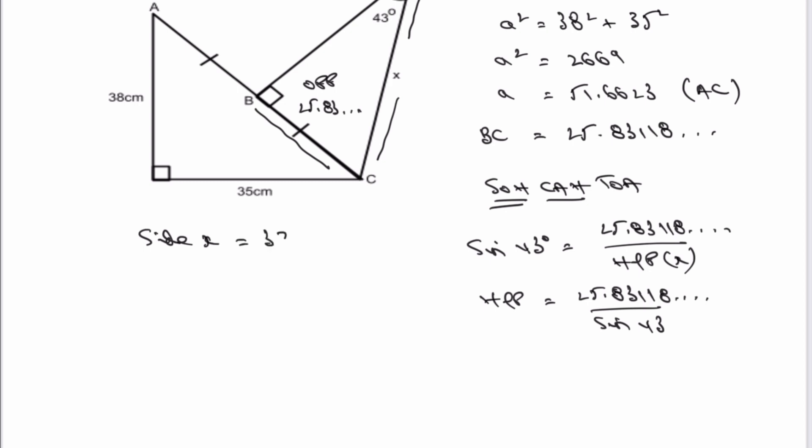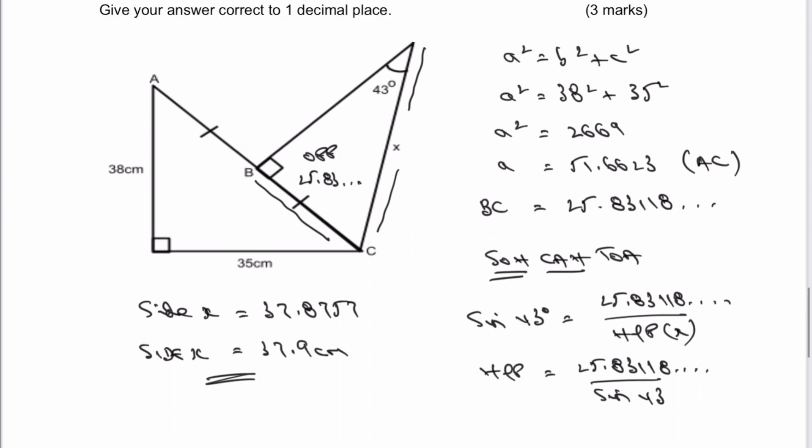When I work that out, side X, which we now know is the hypotenuse, equals 37.8757. When I write that to one decimal place, as asked in the question, side X equals 37.9 centimeters. That would be the answer to that particular question.